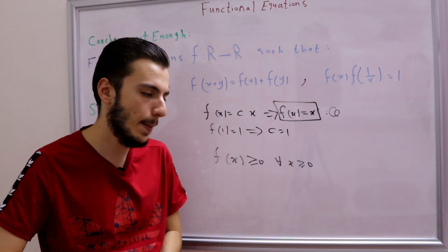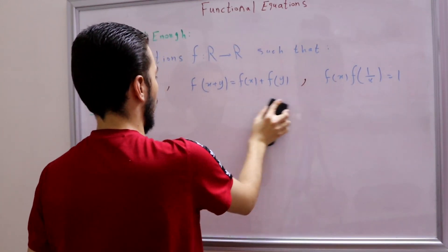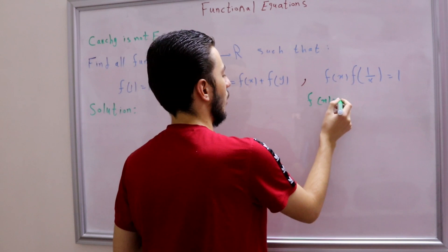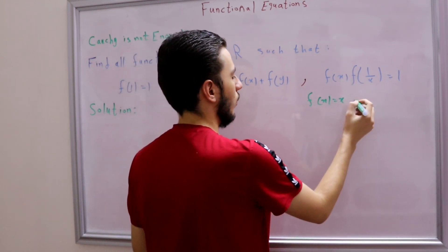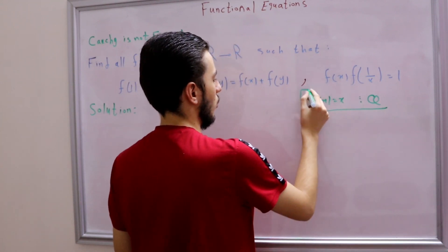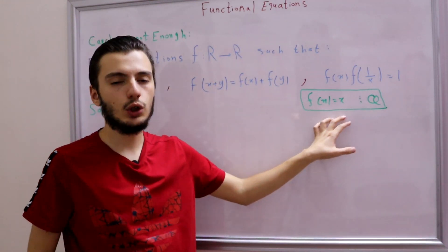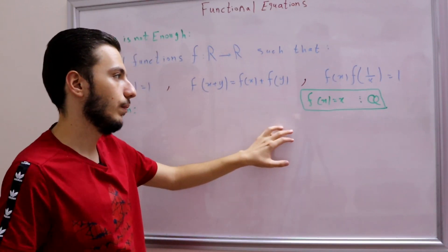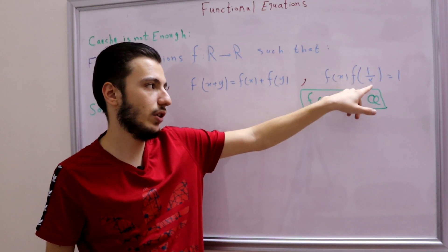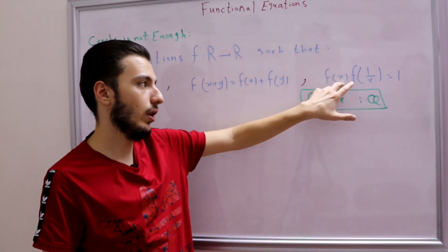Unfortunately, this is not easy. Our first result is that f(x) = x for rational numbers — for example f(1)=1, f(2)=2, and so on. To show f(positive) is positive, because we have x and 1/x in our equations, we should think of the famous inequality: |x + 1/x| ≥ 2. I'll leave the proof as homework — write your proof in the comments.